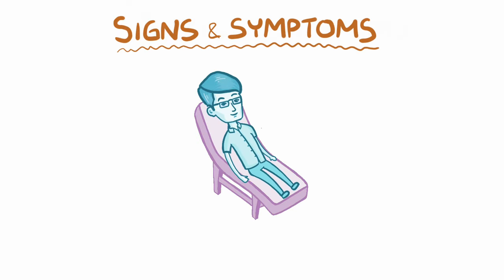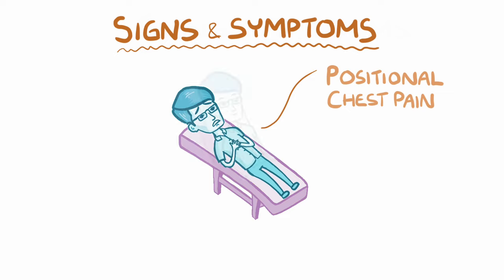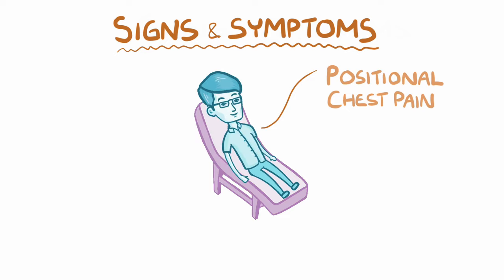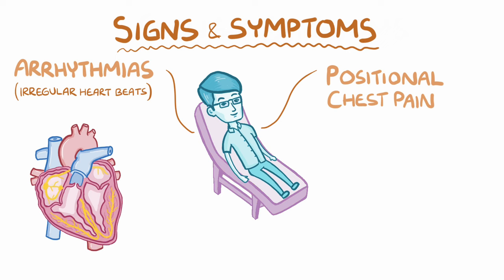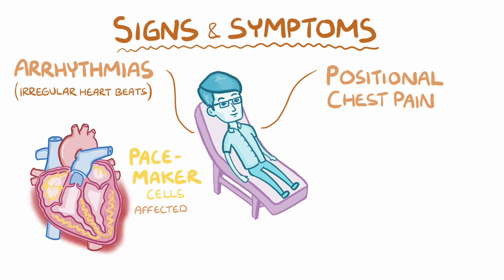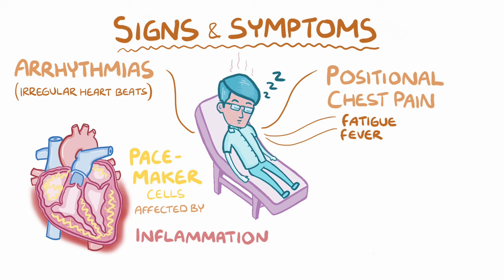Individuals with myocarditis can have chest pain that is sometimes positional, meaning that it can get better or worse depending on the body's position. It can also cause arrhythmias or irregular heartbeats, because the inflammation affects the pacemaker cells travelling through the myocardium. There can also be more general symptoms like fatigue, fever, and shortness of breath.